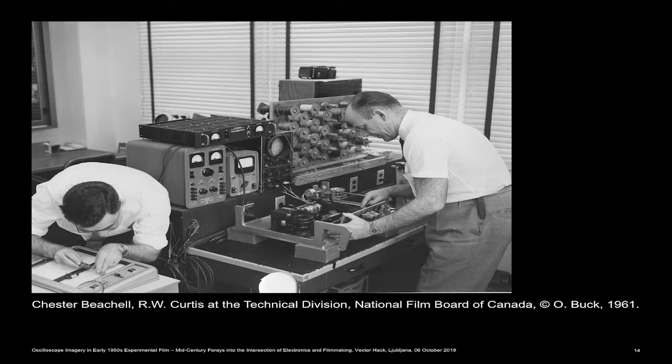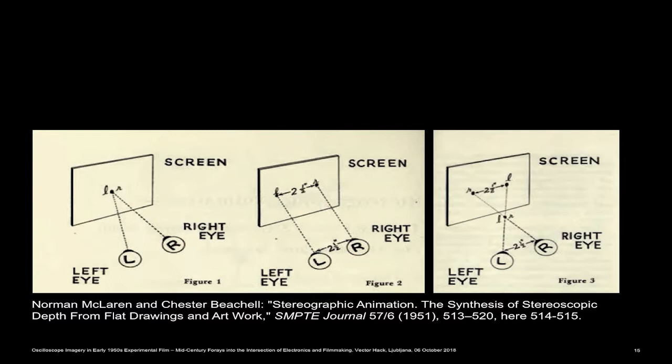The oscillographics were appropriate for the stereoscopic film because the film was animated, not shot using a 3D camera rig. McLaren and Biatchell published an article on the topic in the same year the film was made, 1951. Here we see an excerpt from that article. The title already tells the whole story: 'Stereographic Animation: The Synthesis of Stereoscopic Depth from Flat Drawings and Artwork.'